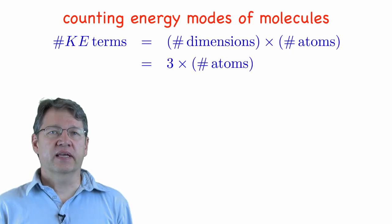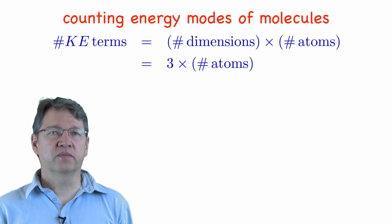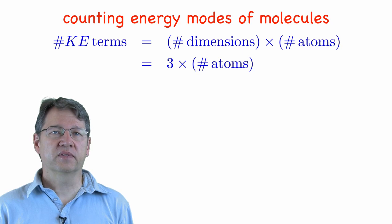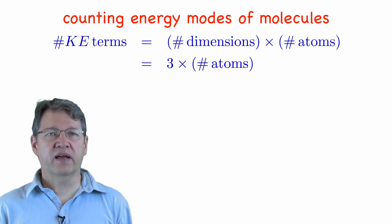The next big topic was the counting of all the energy modes for molecules. The first step is quite simple. We need to find the total number of kinetic terms, which is just the number of spatial dimensions multiplied by the number of atoms. Since we live in a three-dimensional world, we just have to multiply the number of atoms by 3.